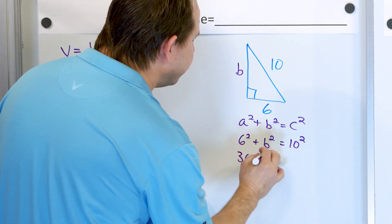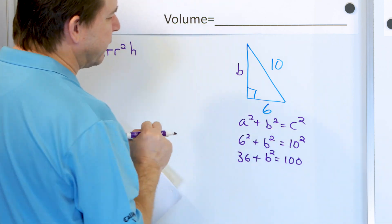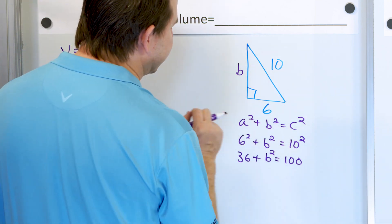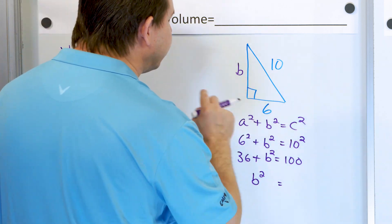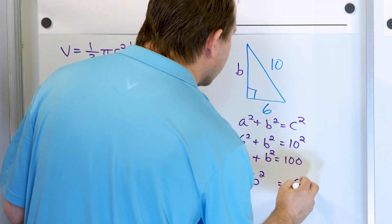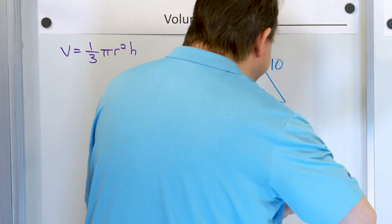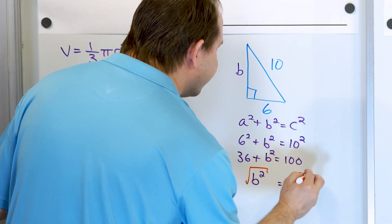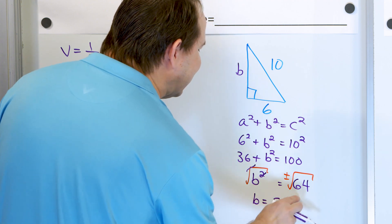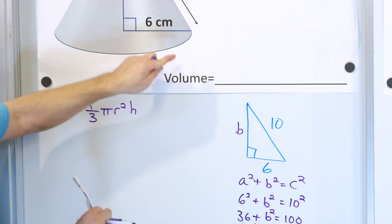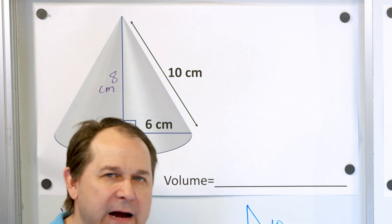Six times six is 36, plus B squared equals 100 because 10 times 10 is 100. Now subtract 36 from both sides. On the left, we're left with B squared. On the right, 100 minus 36 gives us 64. We take the square root of both sides — we'll ignore the negative answer — and B equals 8 because 8 times 8 is 64. Going back to the figure, we now know this side is 8 centimeters. This was not given to us in the drawing, but we were able to find it by other means.